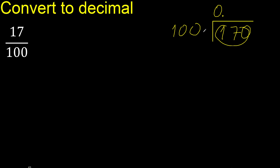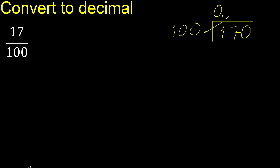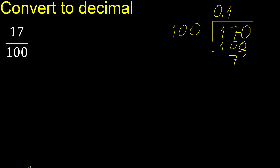100 multiplied by which number is nearest to 170 but not greater? Multiplied by 2 is 200, which is greater. Therefore multiplied by 1 is 100. Subtract: result is 70.